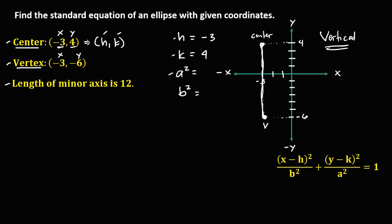To find the value for a, we solve from center to vertex using the counting method. Starting from the center point, count on the next point: 1, 2, 3, 4, 5, 6, 7, 8, 9, 10. Therefore, a is equal to 10, and a squared is 10 to the power of 2.